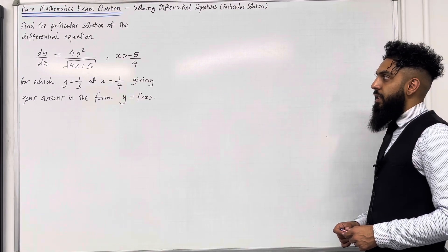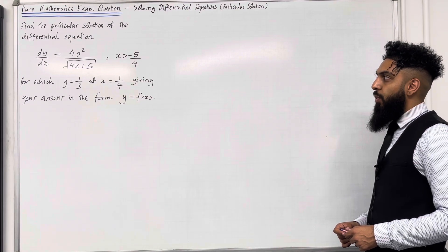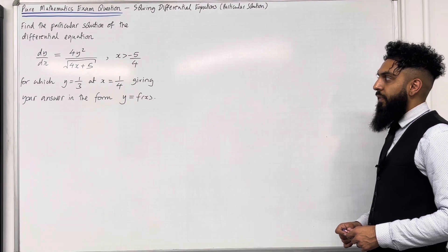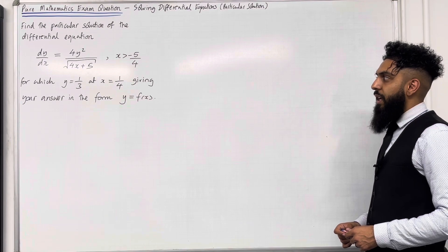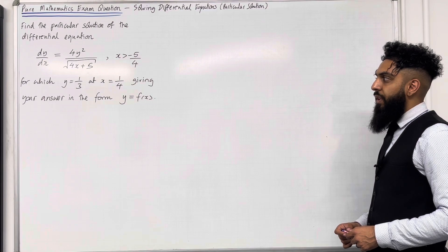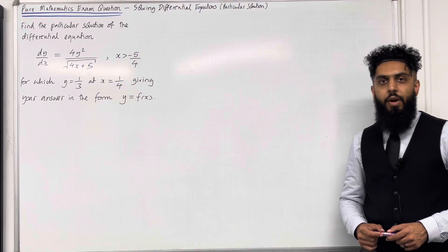Find the particular solution of the differential equation dy over dx equal 4y squared over square root of 4x plus 5, where x is greater than minus 5 over 4, for which y is equal to 1 over 3 at x equal to 1 over 4, giving your answer in the form y equal f of x.